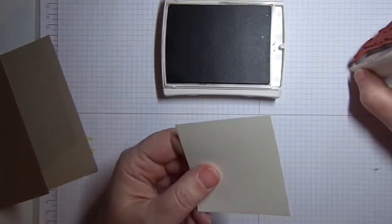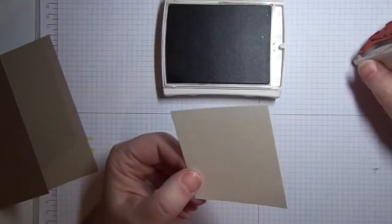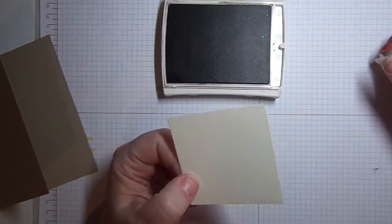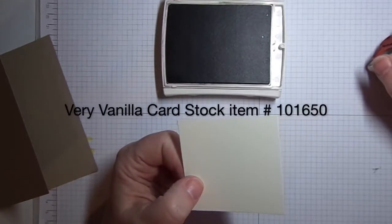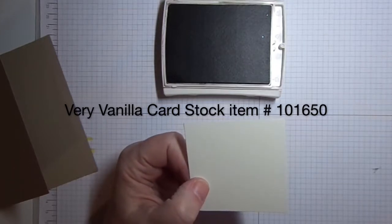And we have a square of whisper white— I'm sorry, this is not whisper white, this is very vanilla, and it's two and three quarters by two and three quarters. Actually, before I stamp, I think I'm going to go through the sizes for all of our pieces of our card.